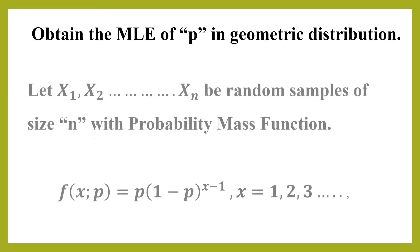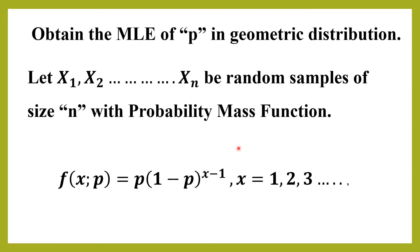Let x1, x2, up to xn be a random sample of size n with probability mass function — because it is a discrete probability distribution — f(x; p) = p · (1−p)^(x−1), where x = 1, 2, 3, and so on.